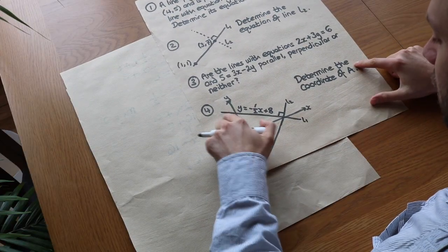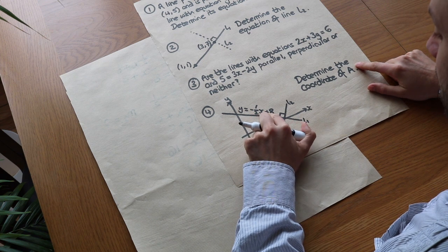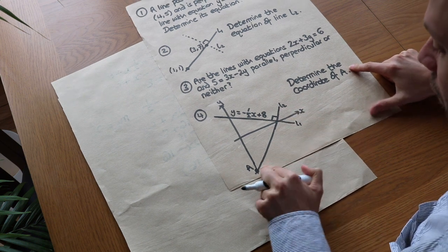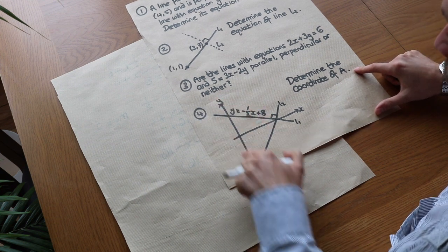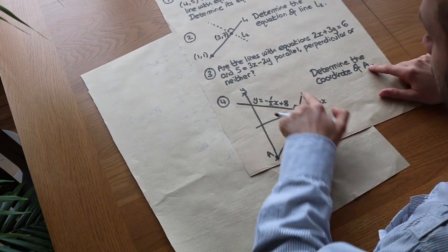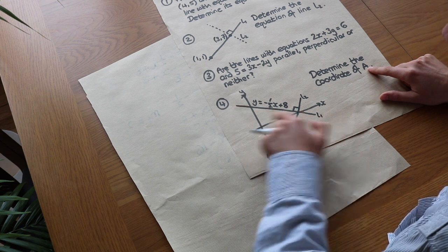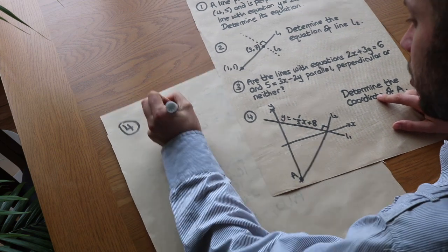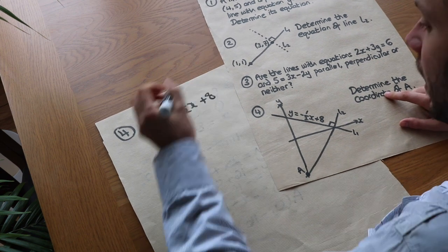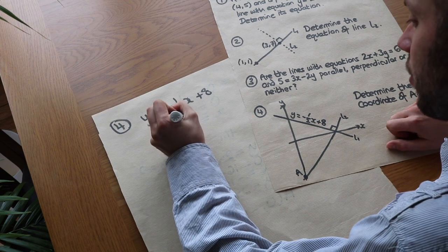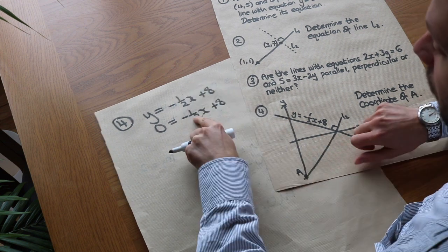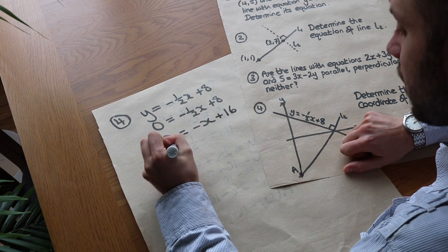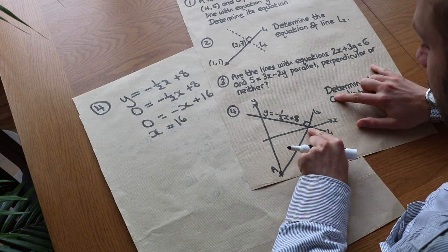As a final question, we have line L1 with equation y = minus a half x + 8, which intersects line L2 at a point. L2 is perpendicular to L1, and we need to find the coordinates of point A, which is the y-intercept of L2. The two lines share a point which is the x-intercept of L1. To find the x-intercept, we set y = 0: 0 = minus a half x + 8. Doubling both sides: 0 = minus x + 16. Add x to both sides: x = 16. So this intersection point has coordinates (16, 0).